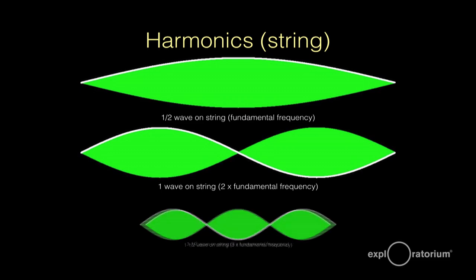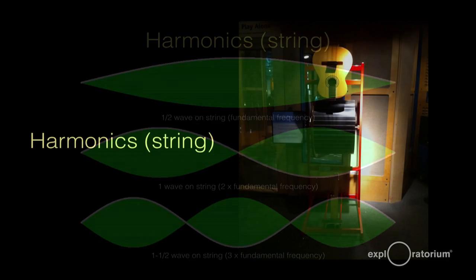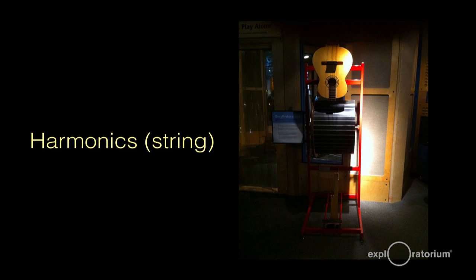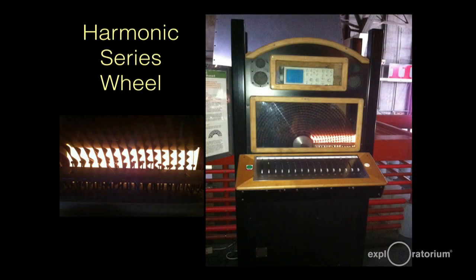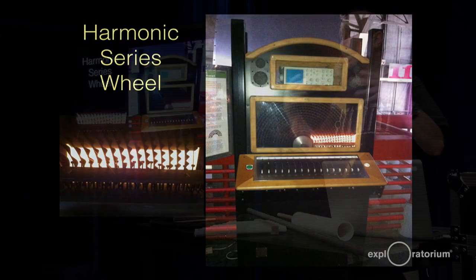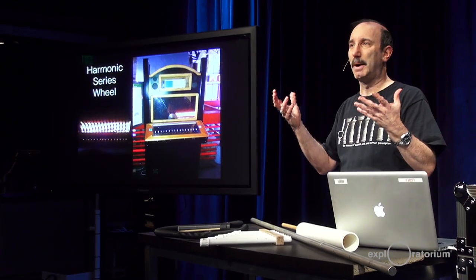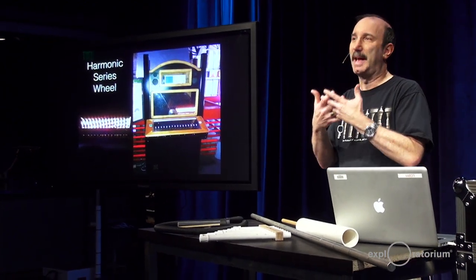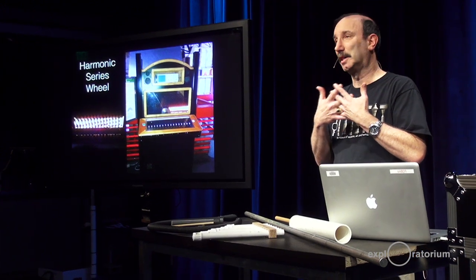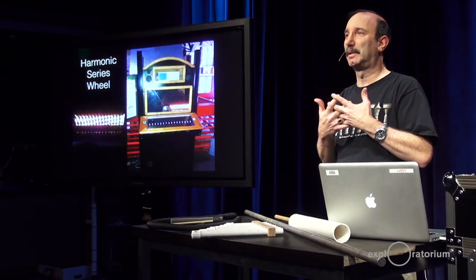For strings and open pipes, it's one, two, and three times the frequency. You can go out on our floor and find good examples — if you find the Cylinderoscope exhibit, you can see strings vibrating by plucking them against a rotating drum of stripes, and you can see the actual waves on the string. On the harmonic series wheel, you can play with all the harmonics and add them up. You can take various harmonics, add them up and combine them, and that's what gives instruments their color, their timbre — what makes an instrument sound like the instrument it is. Why an oboe sounds like an oboe, and why a guitar sounds like a guitar, has everything to do with the harmonics generated inside that instrument.